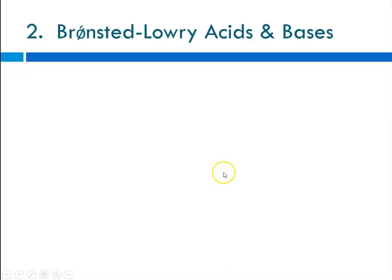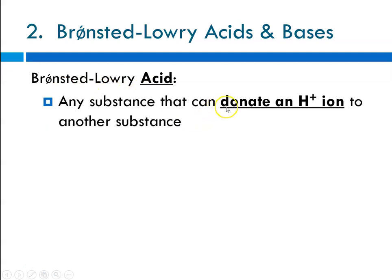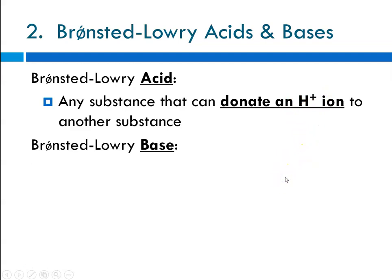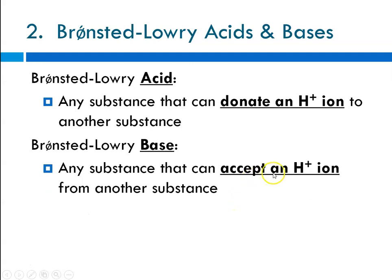Today we're going to cover definition two: the Bronsted-Lowry definition of acids and bases. A Bronsted-Lowry acid is any substance that can donate an H+ ion to another substance — it is a hydrogen ion or proton donor. A Bronsted-Lowry base is any substance that can accept a hydrogen ion from another substance, making it a proton acceptor.